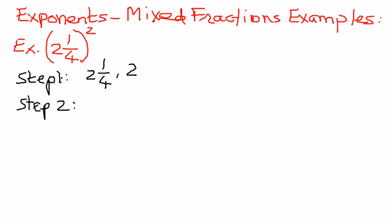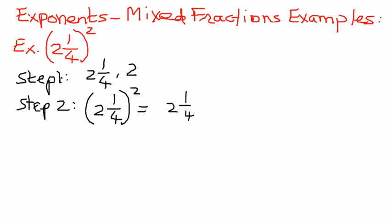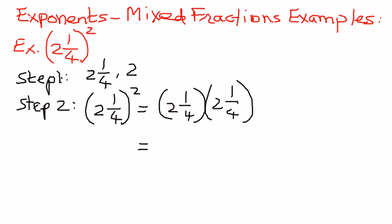So therefore, let us write the problem here. 2 and 1 fourth raised to the power of 2 can be expanded as 2 and 1 fourth times 2 and 1 fourth. The base term is repeated twice, and that is what we needed to do. Now we know how to simplify mixed fractions.